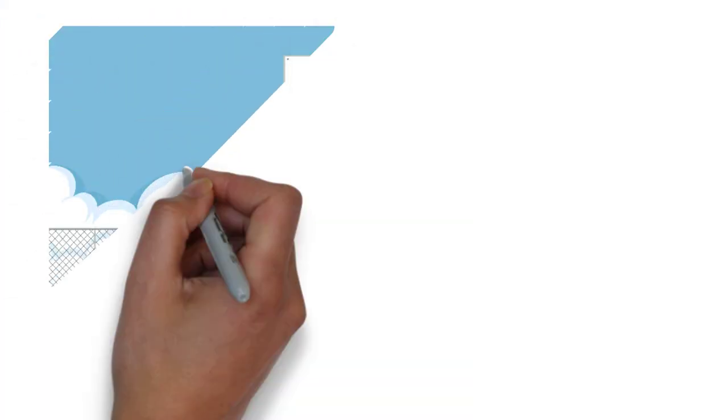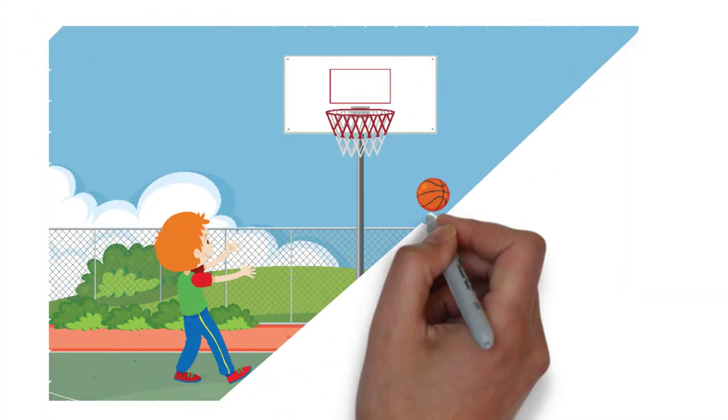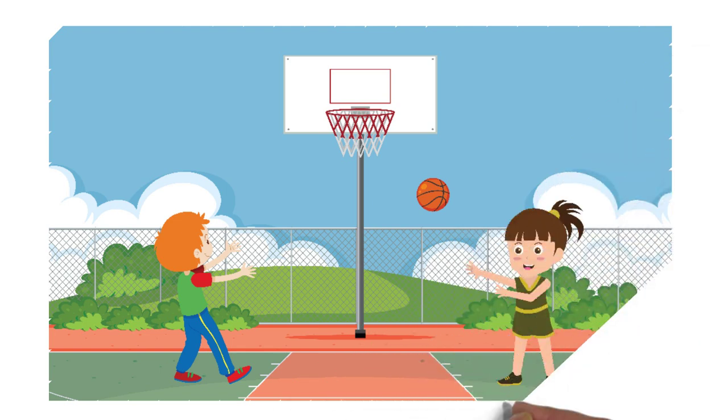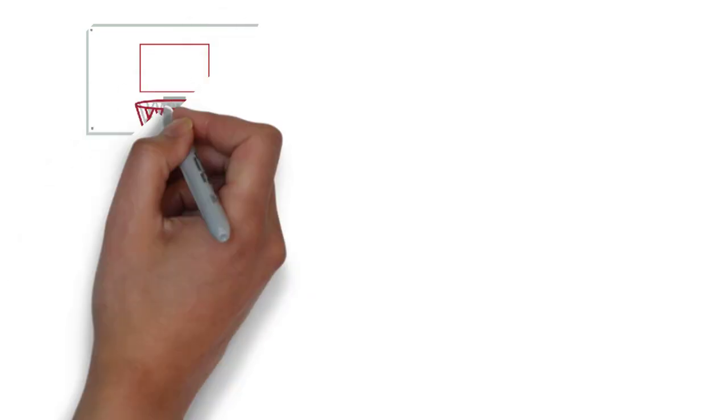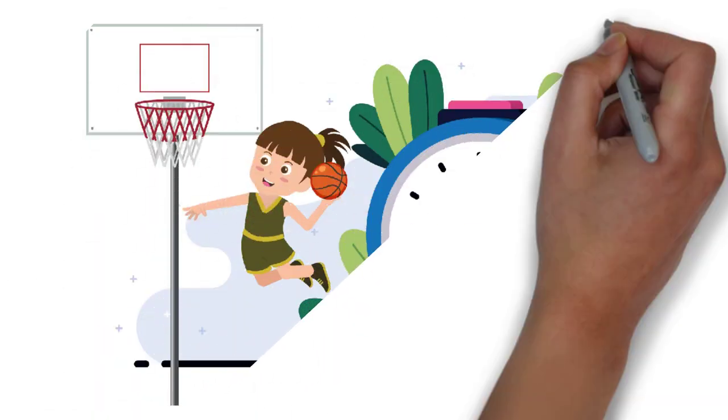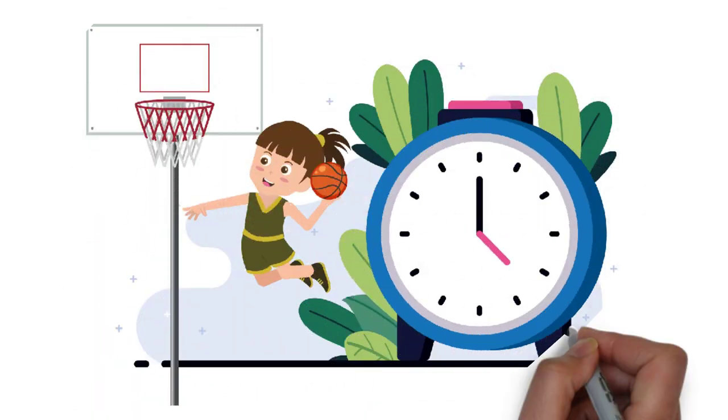Once upon a time, there was a young girl named Rina who loved playing basketball. She practiced for hours every day since she was determined to become a great player.